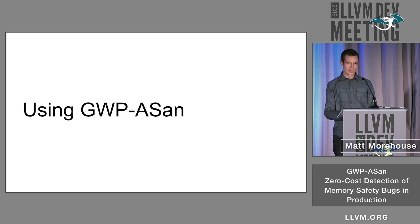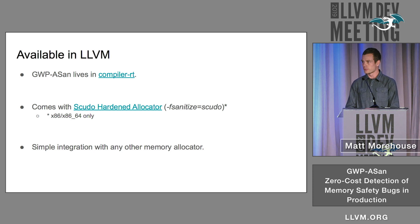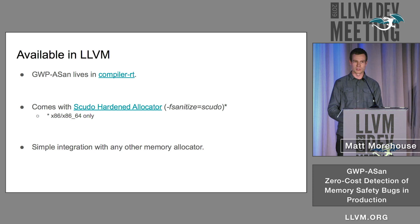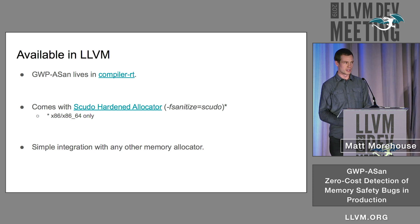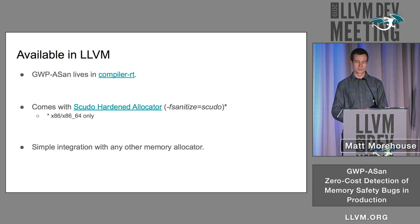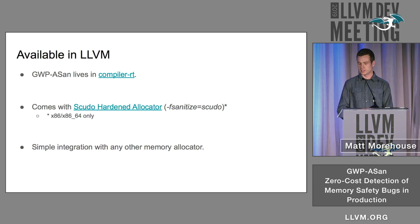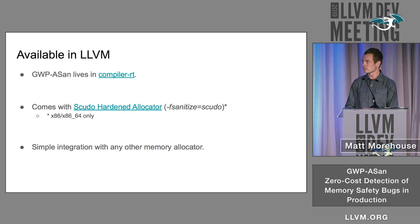If you'd like to use GWP-ASAN yourself, it's available today in CompilerRT and it's integrated by default with SCUDO. So if you build with -fsanitize=scudo, you'll get GWP-ASAN.